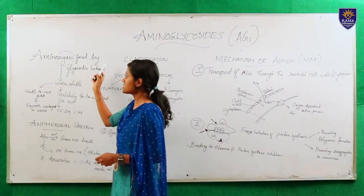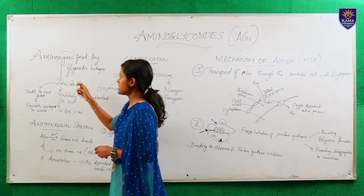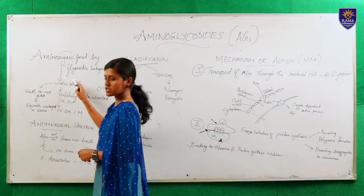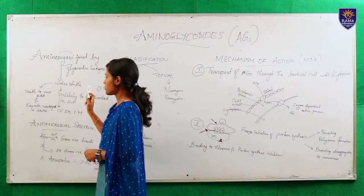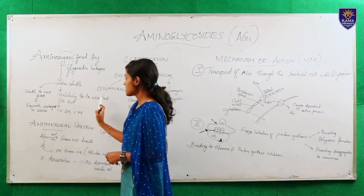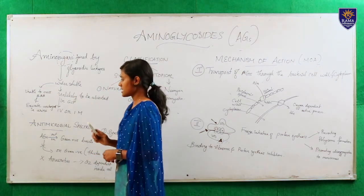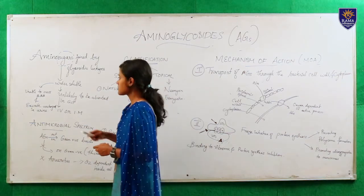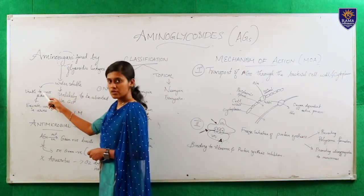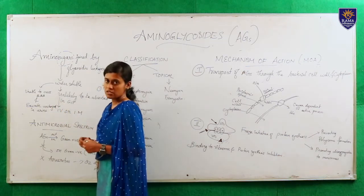Amino sugars are joined by glycosidic linkages, hence it is named Aminoglycosides. These sugars make them water soluble. They are highly polar compounds. As they are water soluble, they are unlikely to be absorbed in the GI tract, so they are almost given as IV or IM route. This water solubility also makes them unable to cross the blood-brain barrier, and they also excrete unchanged in the urine.